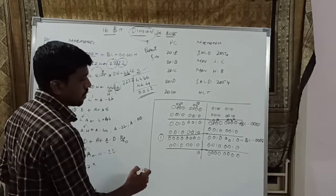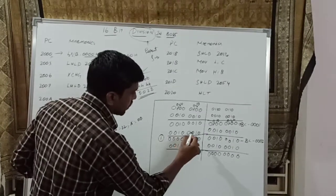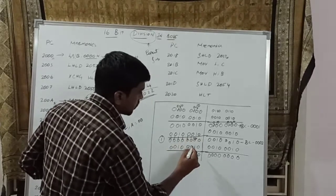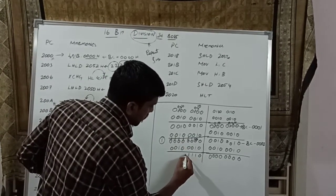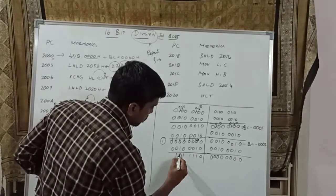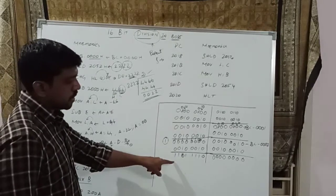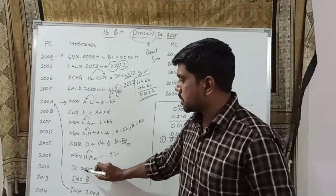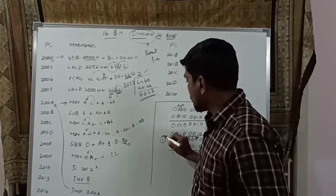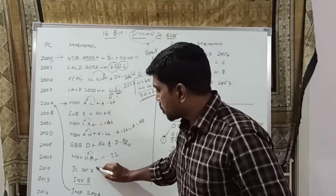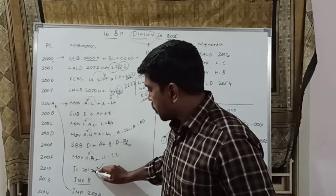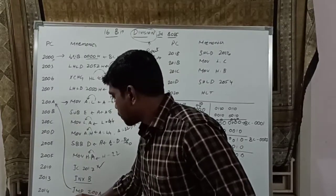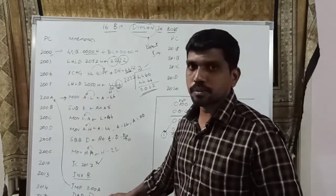Since 0 minus 1 is not possible, you get a borrow from outside the bit. This carry bit is propagated, and after subtraction you get a non-zero result indicating borrow. Then check the condition JC 2017H — in this case, carry value is present in the subtraction, so the condition is true. Once the condition is true, it ignores the next instruction and goes directly to specified memory location 2017H.